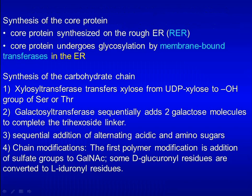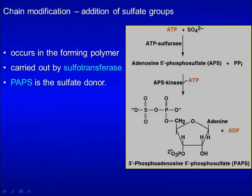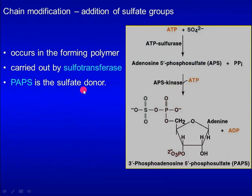Addition of sulfate groups occurs in the forming polymer and is carried out by sulfotransferase. Sulfate is carried by a nucleotide: 3'-phosphoadenosine-5'-phosphosulfate, or PAPS, which is the sulfate donor. Before a proteoglycan is synthesized, sugar units must be synthesized first, including amino sugars and acidic sugars.